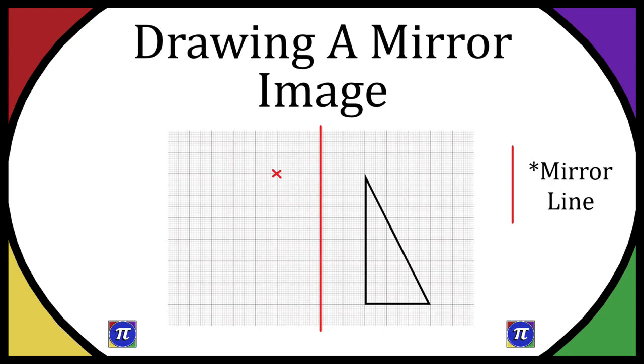So we draw that cross there, it's in the exact same distance from the mirror line. Next up we do the bottom point, now that is also two big squares away from the mirror line so we do a cross there.